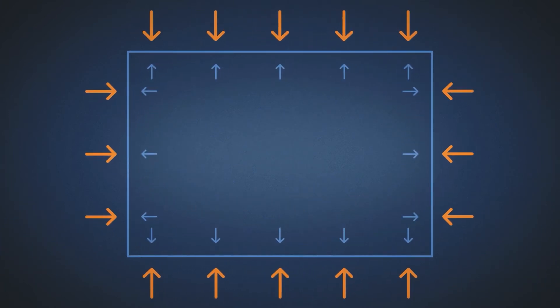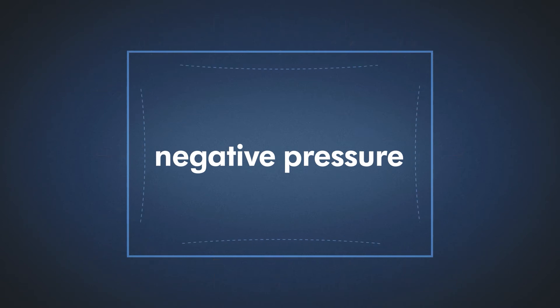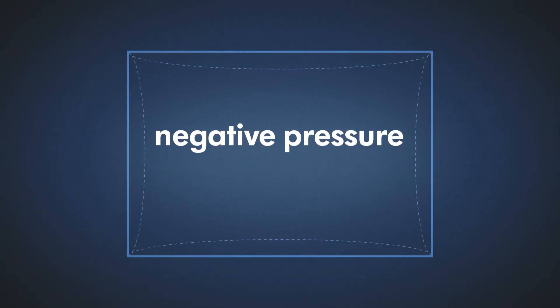In a space where the pressure is lower than the ambient pressure, there is negative pressure. In practice, a negative pressure is often also referred to as a vacuum.